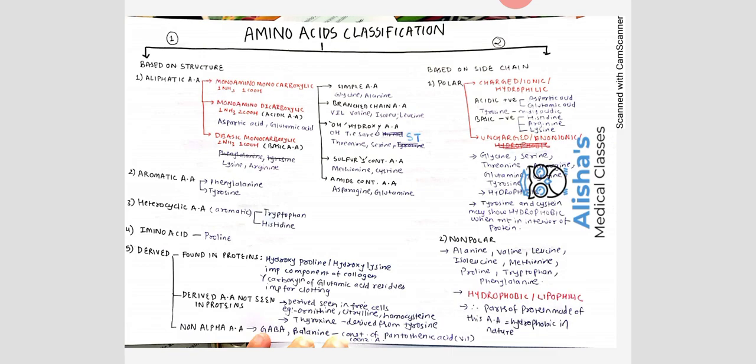Gamma-carboxylation of glutamic acid residues is important for blood clotting. Derived amino acids not seen in proteins are found in free cells — for example, ornithine, citrulline, homocysteine, and thyroxine, which is derived from tyrosine. Non-alpha amino acids include GABA and beta-alanine.